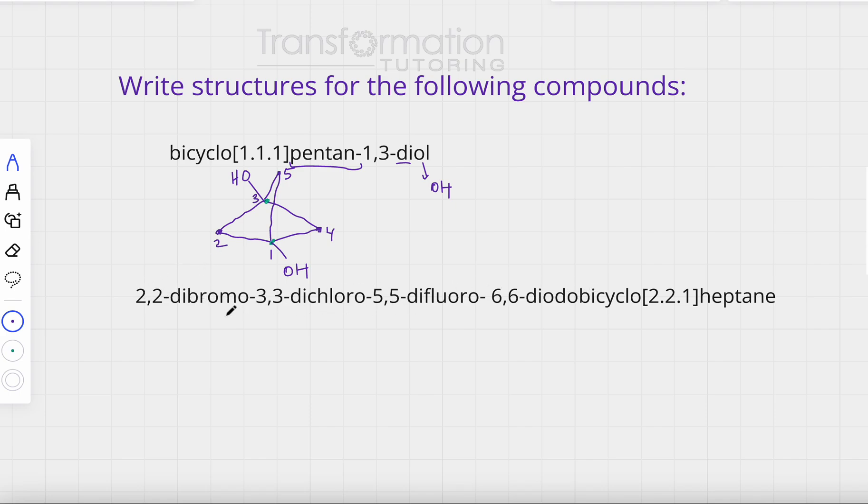Let's look at this scary looking name that's actually not so scary: 2,2-dibromo-3,3-dichloro-5,5-difluoro-6,6-diiodobicyclo[2.2.1]heptane. Again I begin by looking at my brackets - that means I have three bridges with two carbons, two carbons, and one carbon. So let's start drawing.